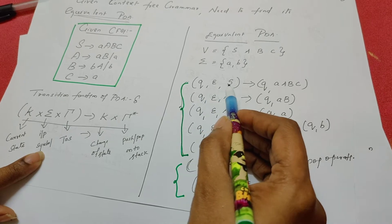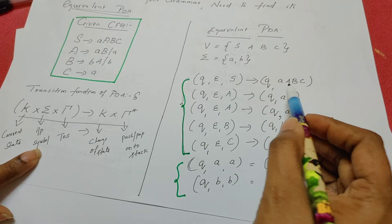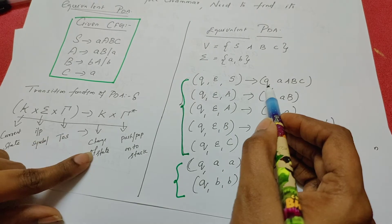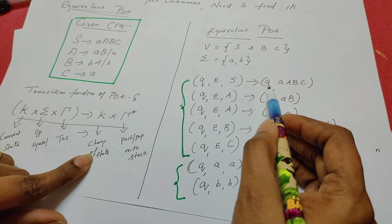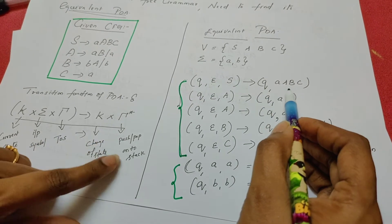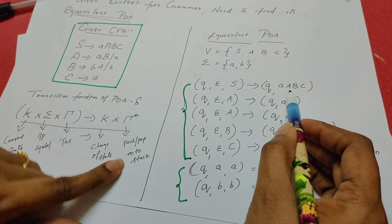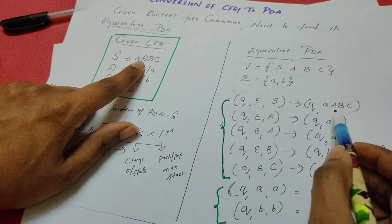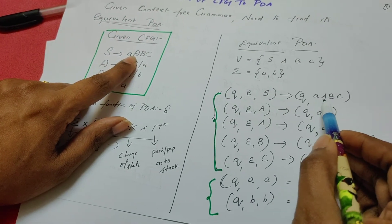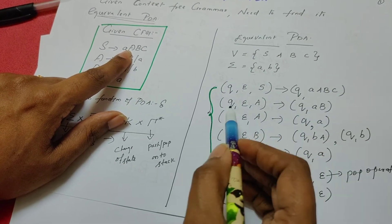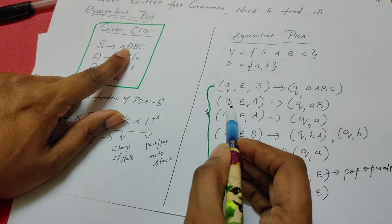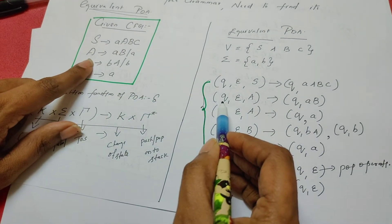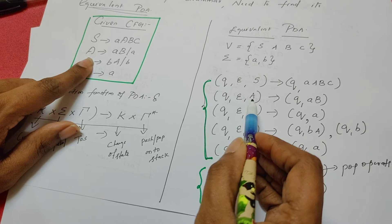When the top of the stack is S (yes), on the right-hand side, the change of state is Q. What is being pushed onto the stack is whatever is given on the right-hand side of the production rule, which is A, A, B, C. Similarly, let us write the rules for the other variables: Q, epsilon, A.